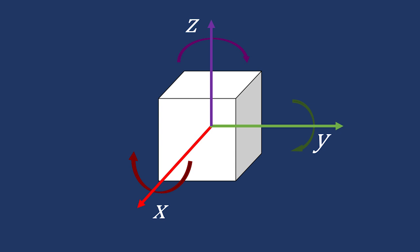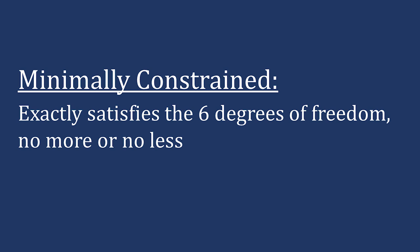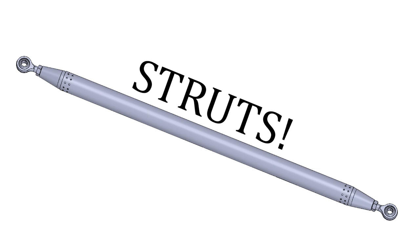Therefore, every 3D object can translate in three directions and rotate in three directions, meaning there's a total of six degrees of freedom. Getting back on track, a minimally constrained structure is one that exactly constrains to six degrees of freedom, no more or no less. There are a few ways to do this, but a common method is to use struts.